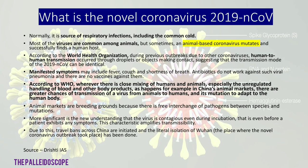The novel coronavirus, nCoV-2019, is mainly causing havoc in humans. It is a source of respiratory infections including the common cold, and is basically an animal-based coronavirus that has mutated. Manifested symptoms may include fever, cough, and shortness of breath. According to WHO, wherever there is close mixing of humans and animals — especially unregulated handling of blood and other body products, as happens in China's animal markets — there are greater chances of transmission of a virus from animals to humans.